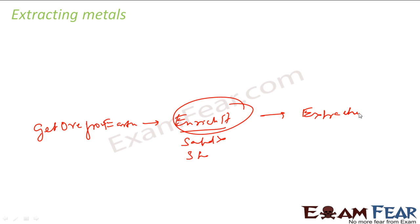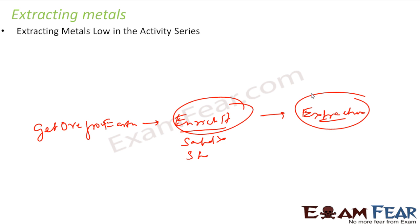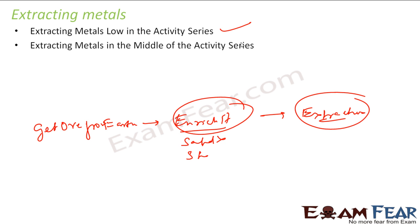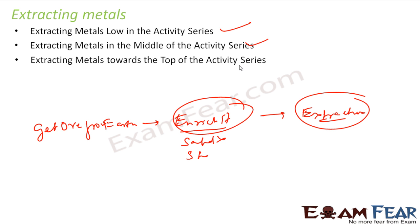So the process is like this: you get ores from earth, then you enrich it — that is, remove sand, stone, etc. Once it is enriched, you start the extraction process. For the extraction process, it depends whether it is a metal of low activity series, metal of middle activity series, or metal of high activity series. For all these three, we will have different extraction processes and we will explain that.